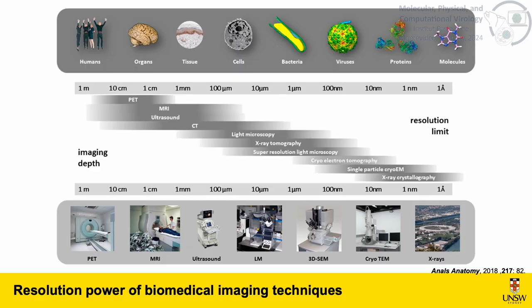When it comes to biomedical imaging techniques, these methods offer different resolution power ranging from more macroscopic to atomic level detail. At one end of the spectrum we have techniques like positron emission tomography, or PET, which provides functional imaging at a resolution of millimeters. At the higher end of the resolution spectrum, X-ray crystallography enables us to see structure at the atomic level, providing an incredibly detailed view of biomolecules. Microscopy techniques, such as optical microscopy and electron microscopy, bridge the gap between cellular and molecular scales.